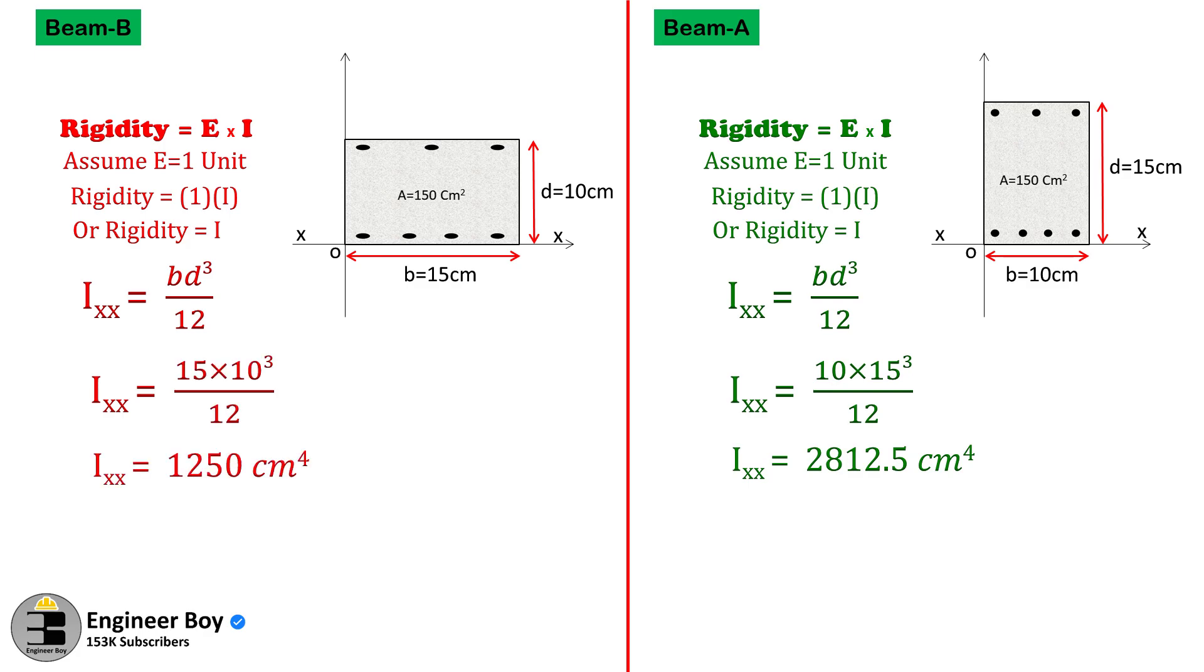So as you can see, the moment of inertia of beam A is greater because of the greater value of its depth. That means more depth brings greater moment of inertia. That's why a beam is placed according to the x-axis where depth is kept greater than its width.